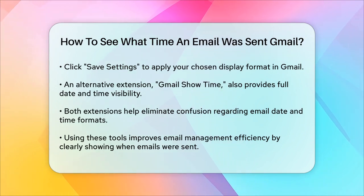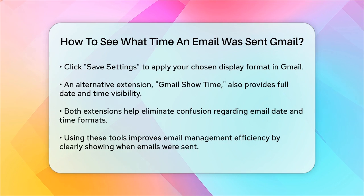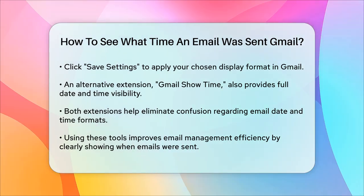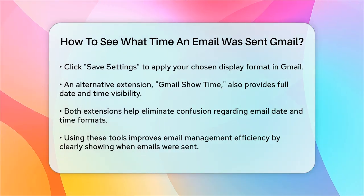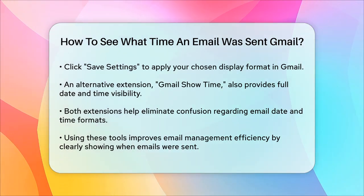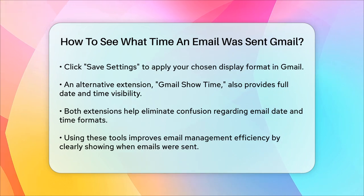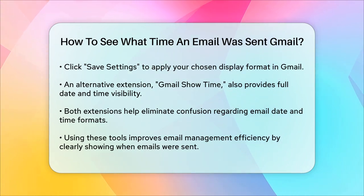Another option is to use the Gmail Show Time extension, which also allows you to see the full date and time in your email listings and detail headers. This extension supports custom date and time formatting as well.